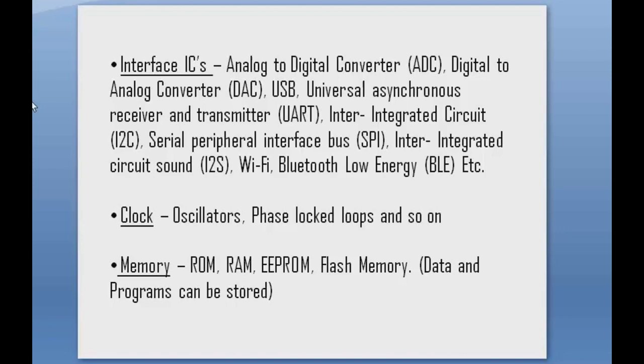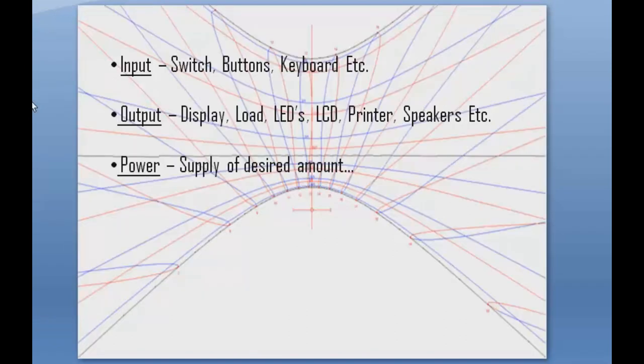Interface ICs include ADC, DAC, USB, UART, SPI, Wi-Fi, and Bluetooth. Clock refers to oscillators, phase-locked loops, and so on. Memory includes RAM, ROM, and flash memory — used for storing data and programs. Input components include switches, buttons, and keyboards. Output includes displays, loads, printers, and speakers. Power supply is needed to give power to the board in the first place.